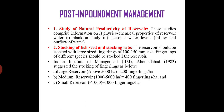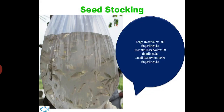Post-impoundment management includes study of natural productivity of water, comprising information on physicochemical properties, plankton study, and seasonal water levels. Regarding seed stocking and stocking rate, the reservoir should be stocked with fingerlings of 100 to 150 mm size. Indian stock management recommended the following stocking rates: large reservoirs at 200 fingerlings per hectare, medium reservoirs at 400 fingerlings per hectare, and small reservoirs at 1000 fingerlings per hectare.